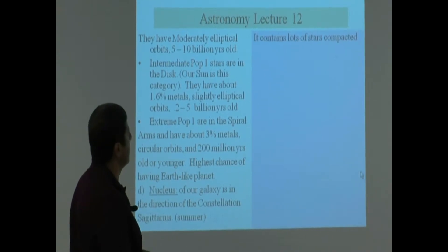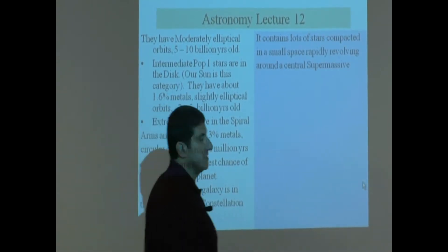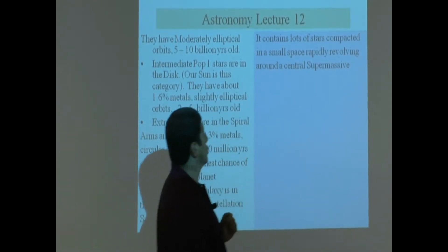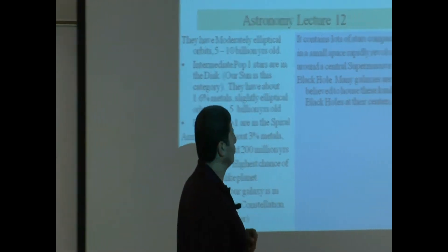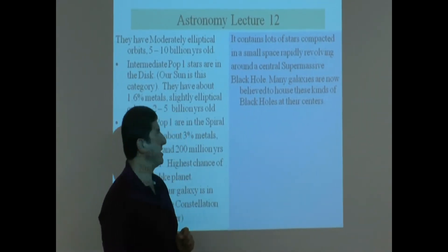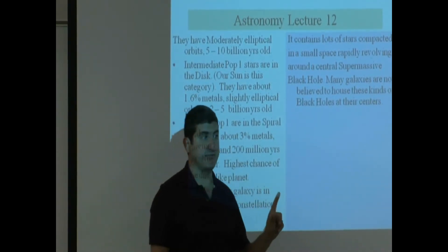It contains lots of stars compacted in a small space, rapidly revolving around the central supermassive black hole. Many galaxies are now believed to house these kinds of black holes at their centers, and these are called supermassive black holes.